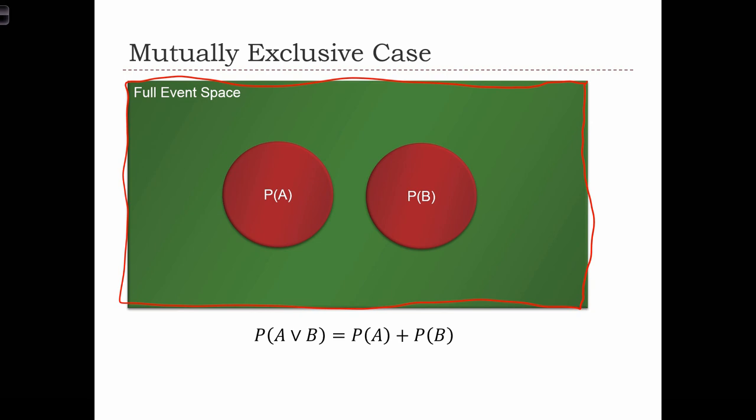We're going to define two events. Event A is in this circle, and event B with this circle. In this case, the two events are mutually exclusive because we see that there's no overlap between them. None of the outcomes in the green space exist in both events simultaneously.